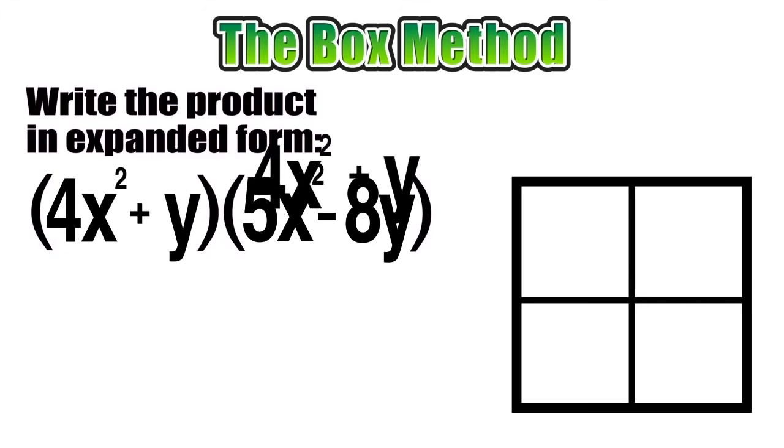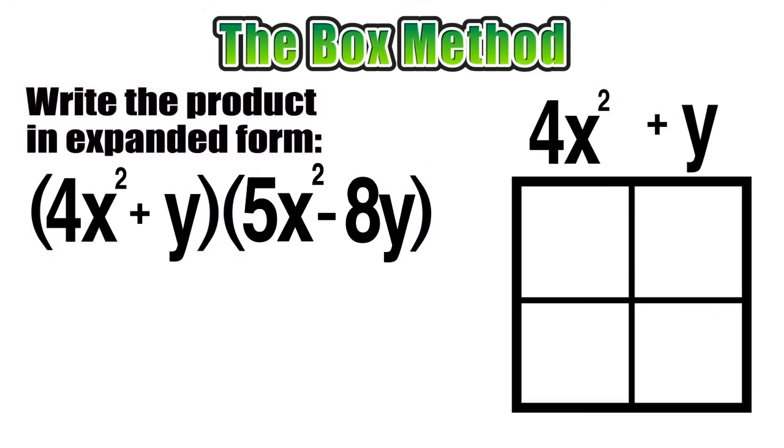Now just a quick note: you could have done this in reverse order, putting the second binomial on top and the first binomial vertically along the side, because we know that multiplication is commutative and the order doesn't make a difference. So now let's go ahead and start multiplying and finding our terms.